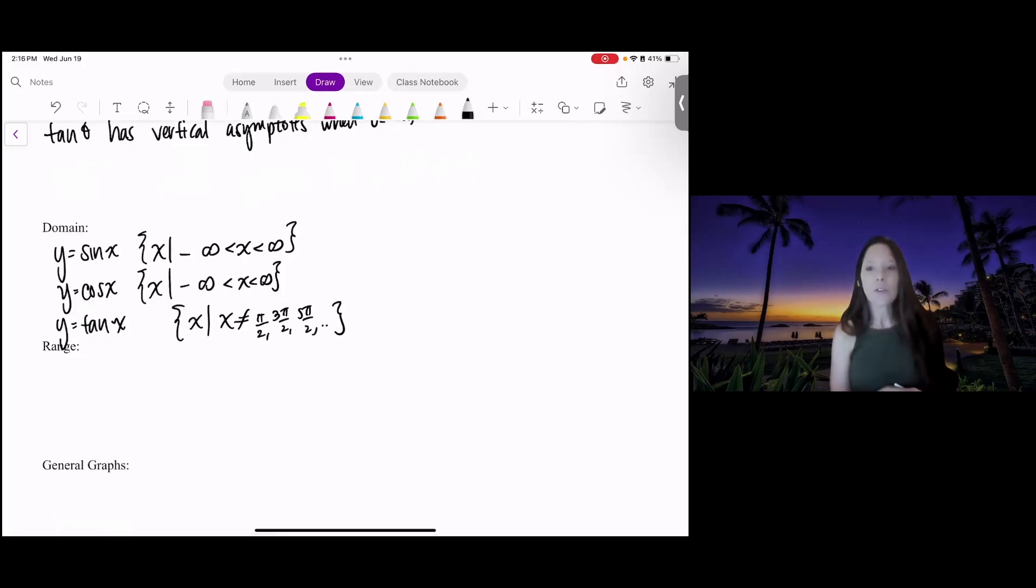Your range, notice that your graph on a unit circle went up to 1, but that was it. So your range is not going to take on all real numbers for sine and cosine. The y values are only going to go from negative 1 to 1, and they will include those values. So you would have negative 1 is less than or equal to y is less than or equal to 1.